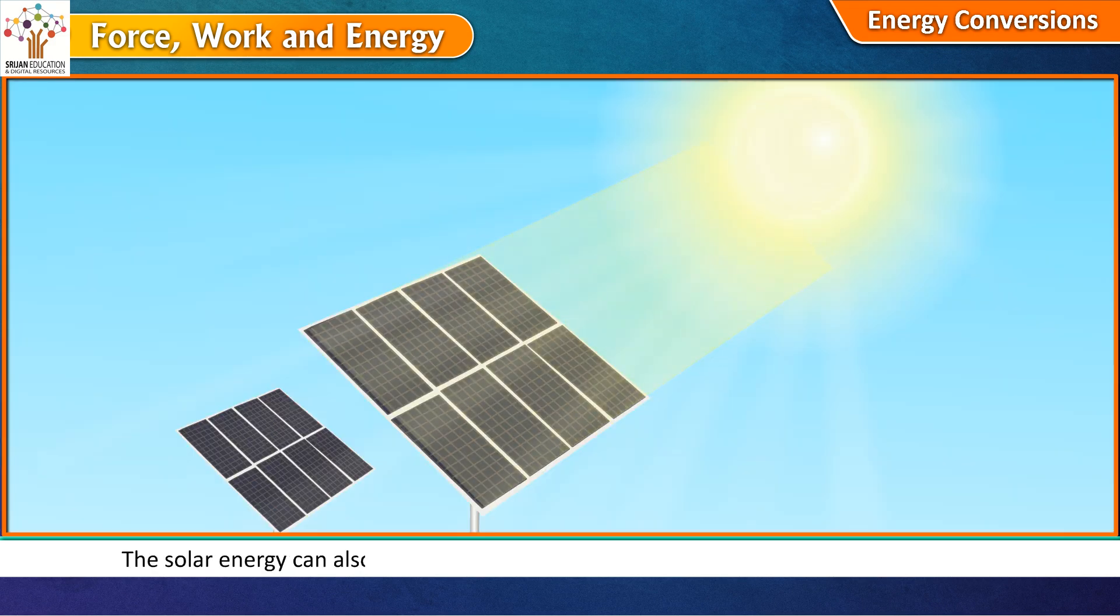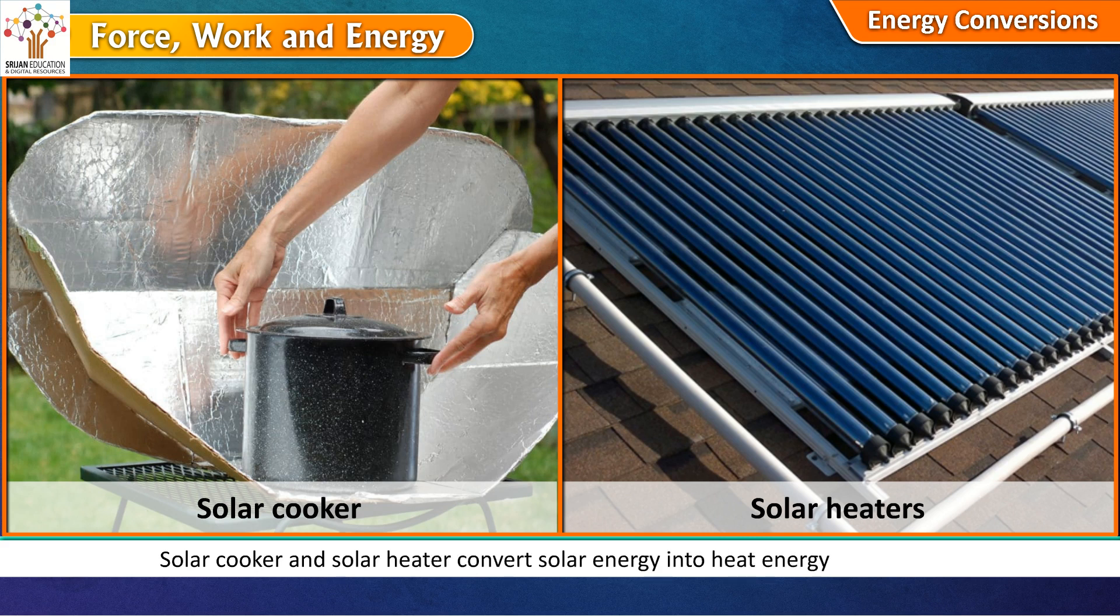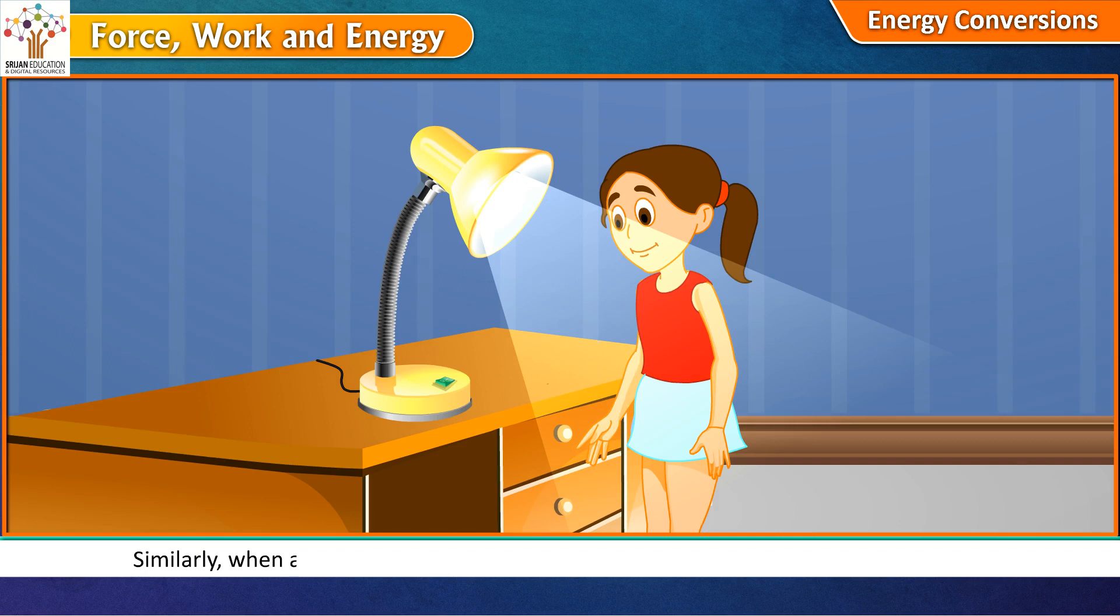The solar energy can also be converted into electrical energy with the help of solar cells. Solar cooker and solar heater convert solar energy into heat energy to cook food and provide hot water, respectively. Similarly, when a bulb is lighted, the electrical energy gets converted into light energy.